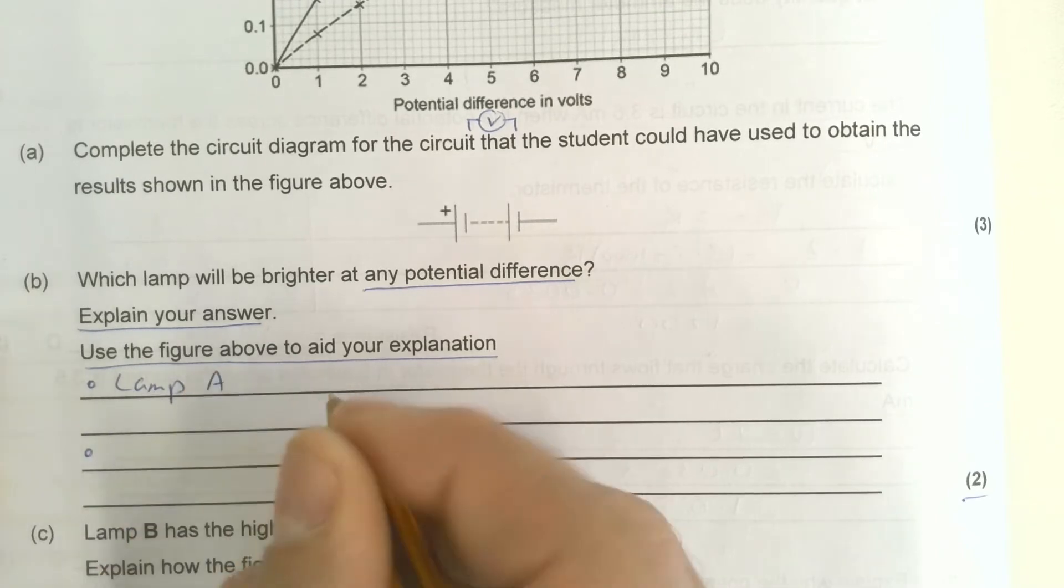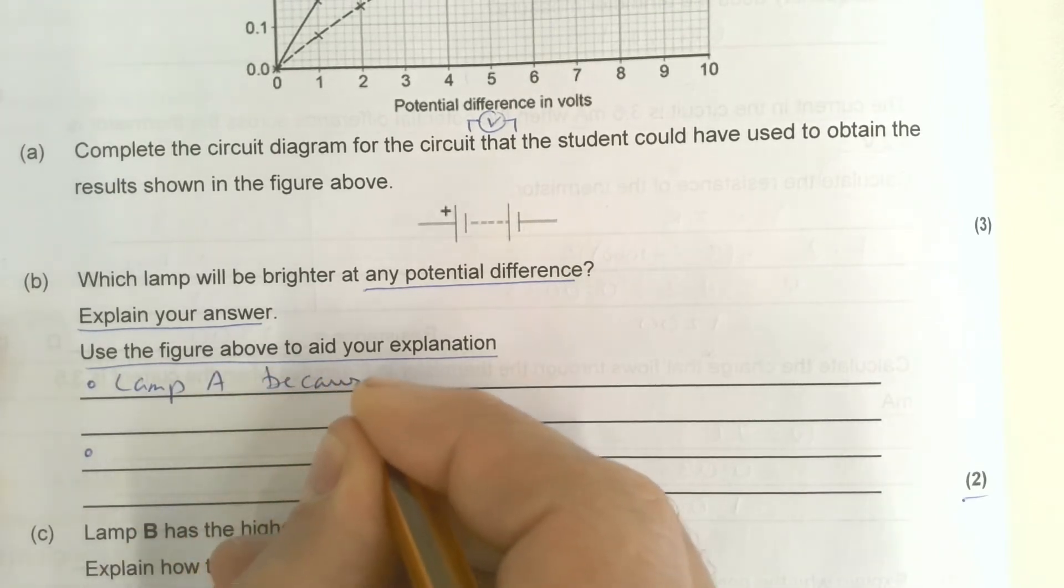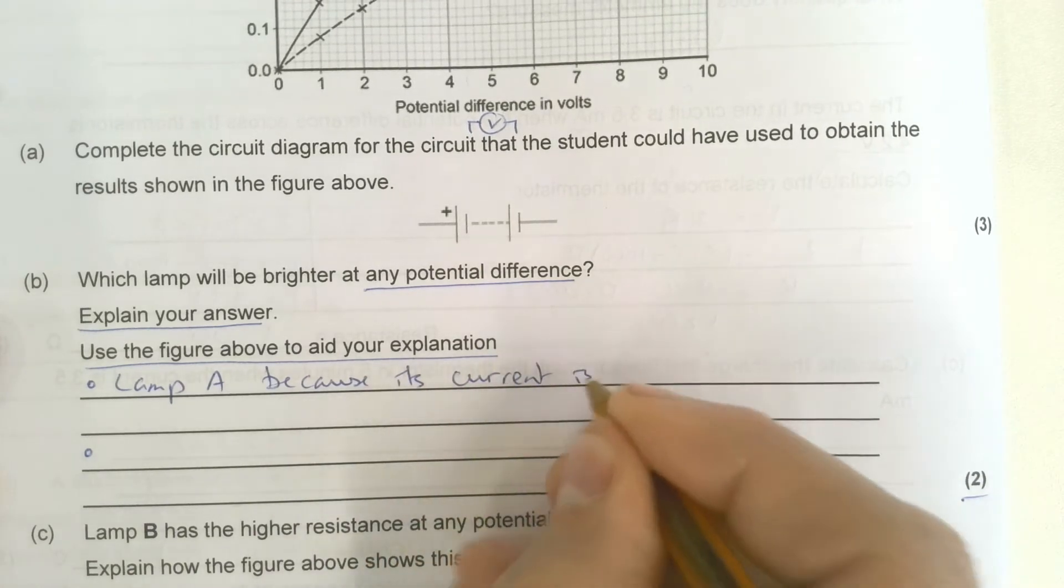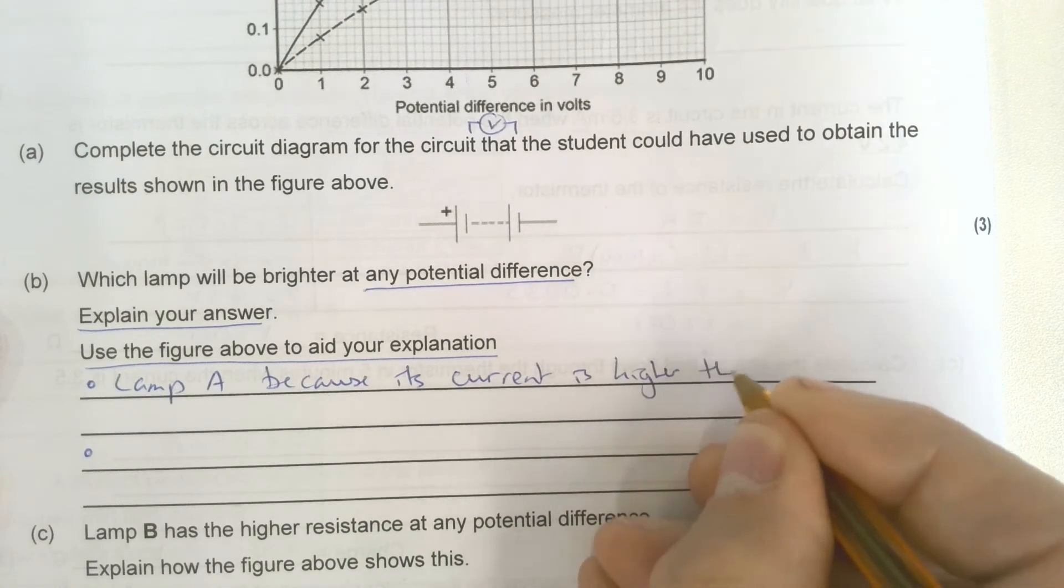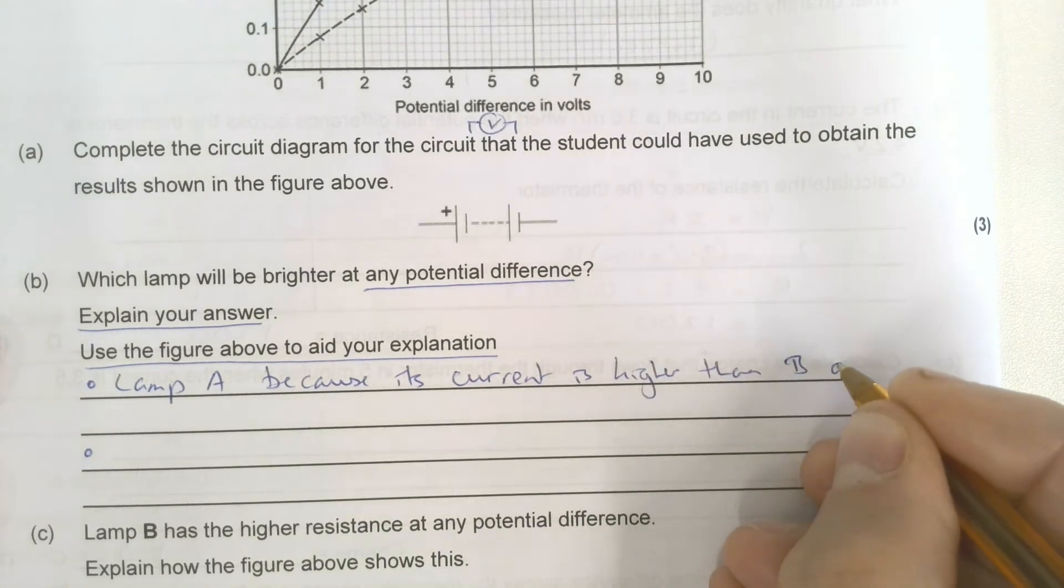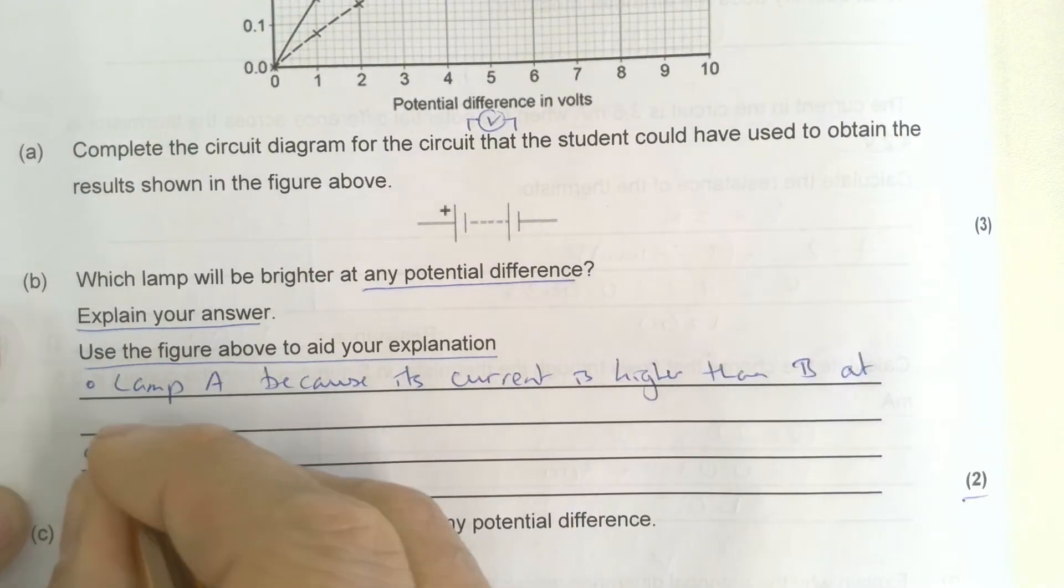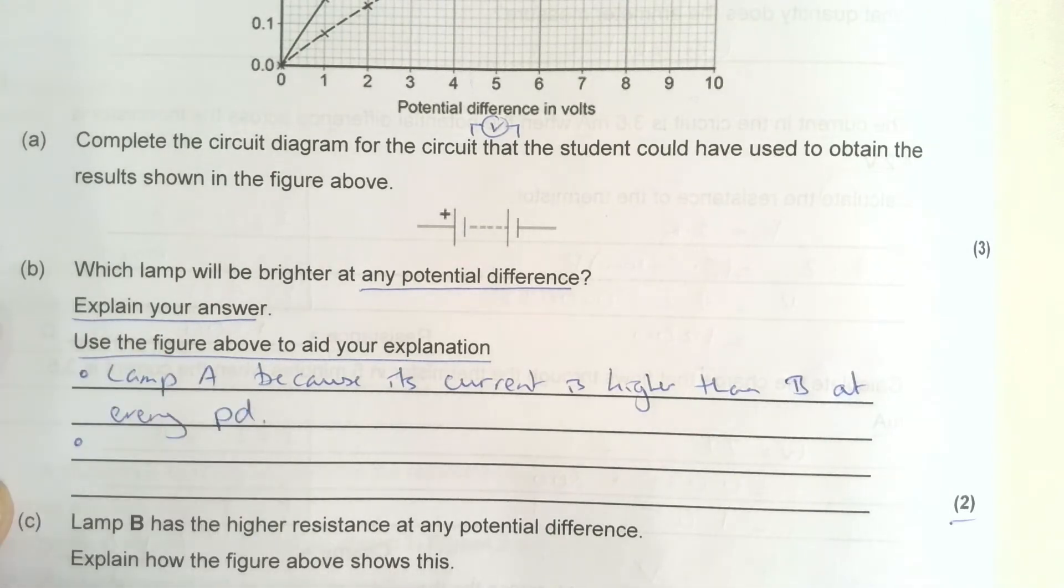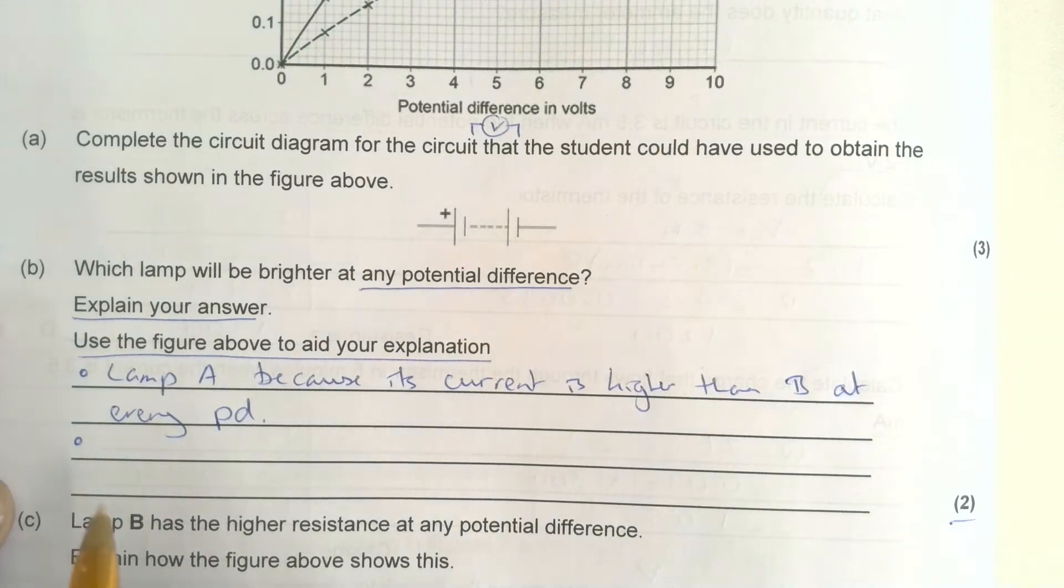Lamp A, lamp A, because its current is higher than B at every PD. Now that's not really enough because I've got two marks. Lots of students only get one mark for this answer. You probably don't necessarily get a mark for just saying lamp A either because you've got to explain your answer and use the figure.